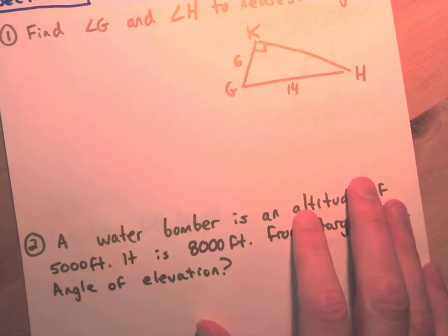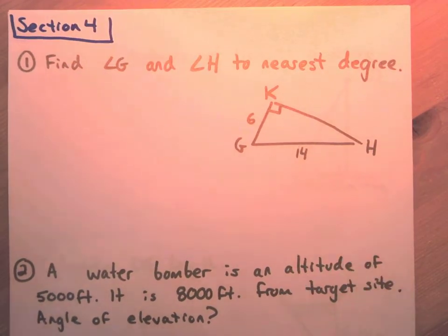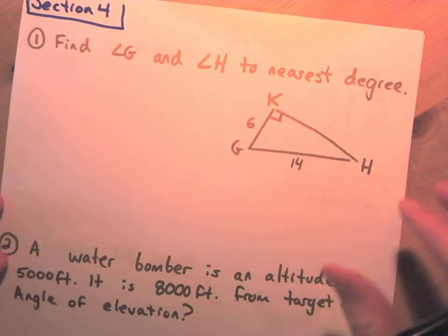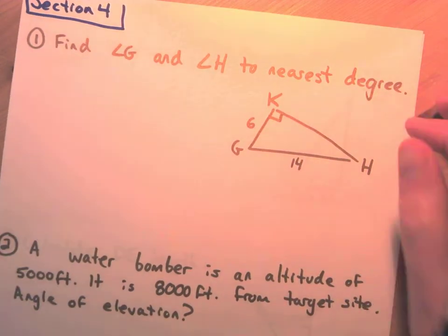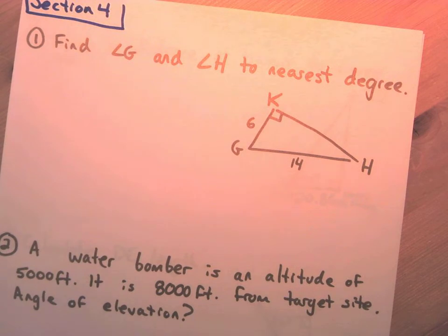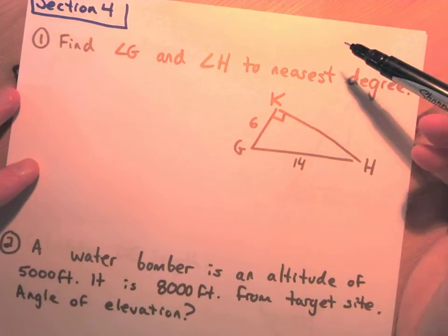Alright, good afternoon. Right now we are going to go through the rest of the trig review. This is section four of our trig — we just did sections one, two, and three, looking at how to find angles and side lengths of right angle triangles. Now we're going to section four, which is pretty similar.